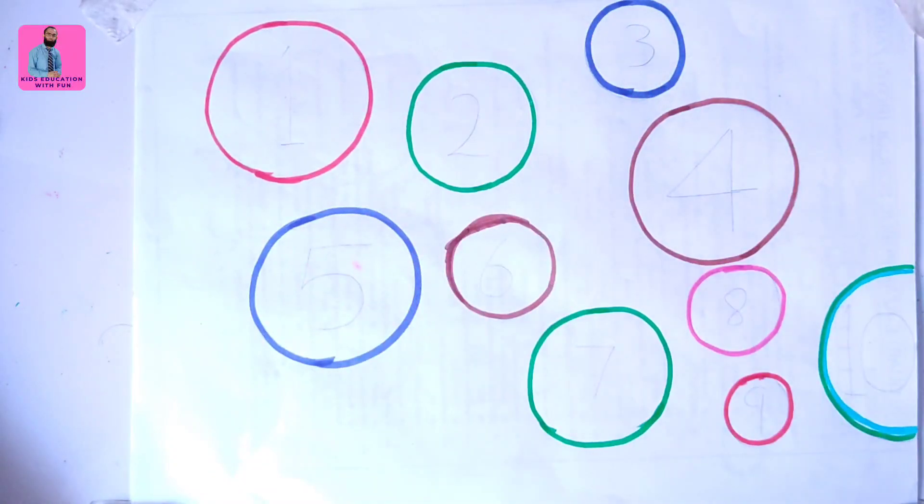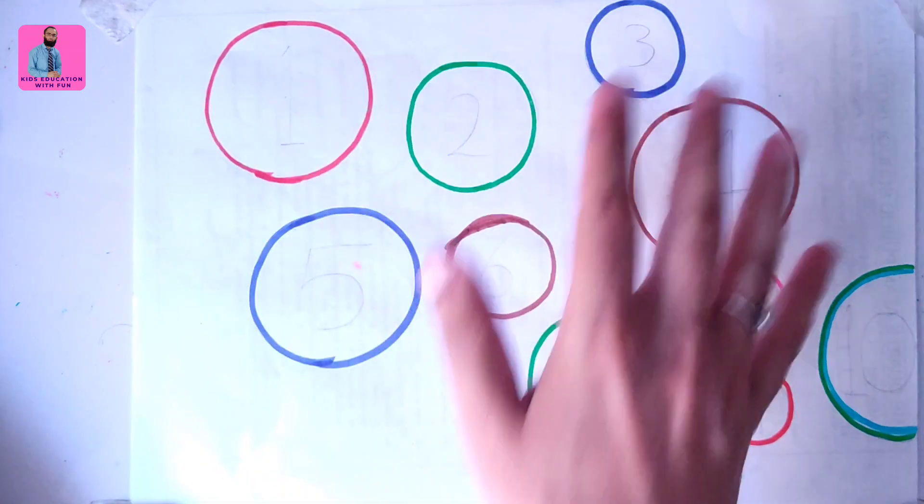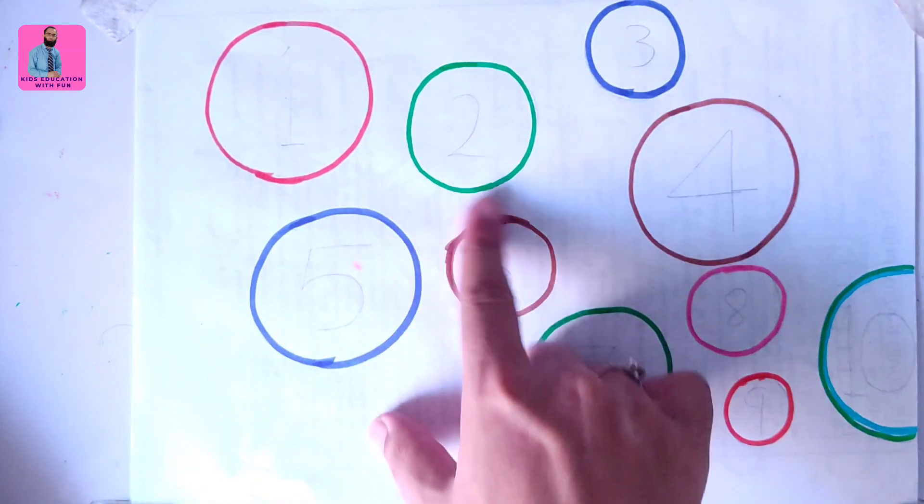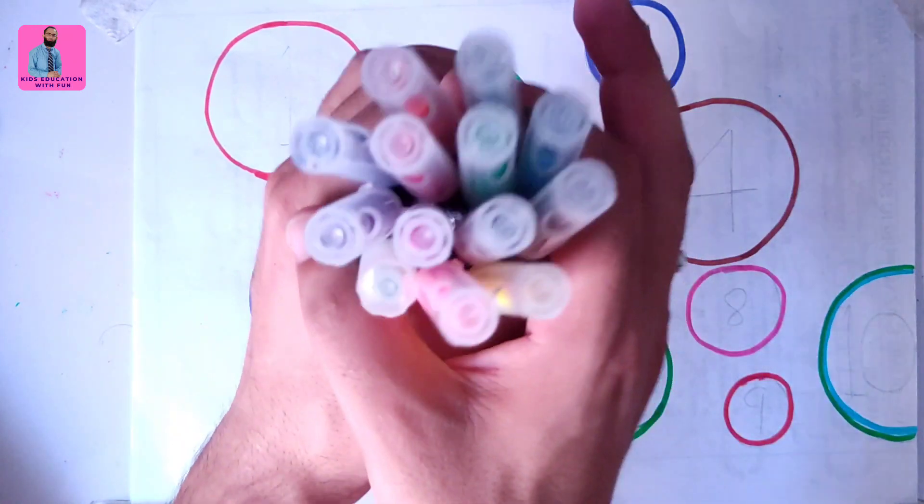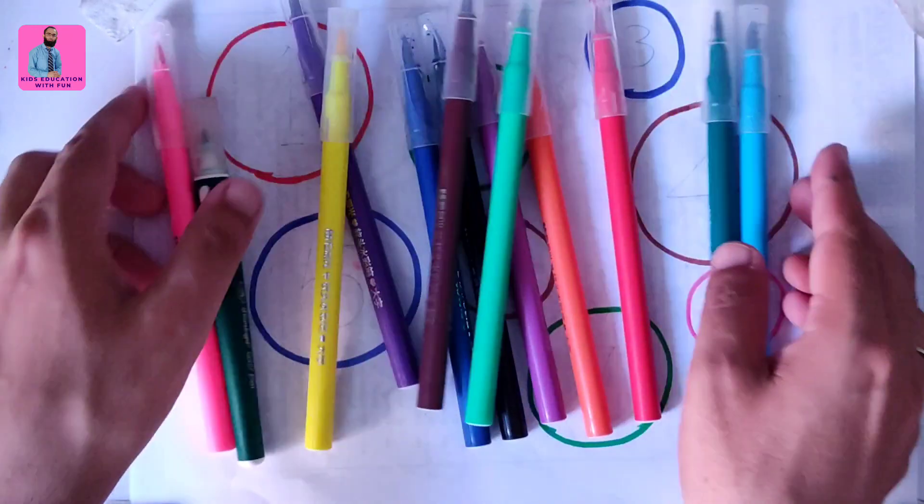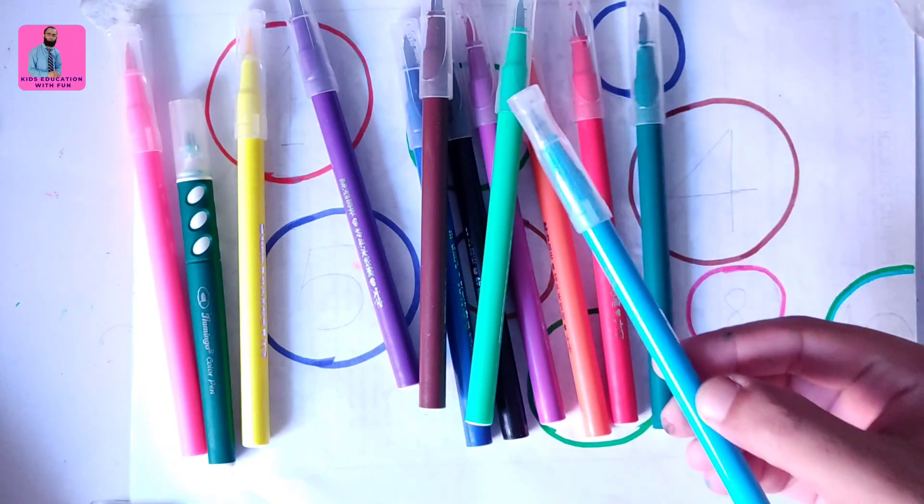Hello kids, welcome to Kids Education with Fun. In this video we are doing a fun activity of counting numbers and writing them and coloring in these bubbles. Before going to that, let's learn some colors. We have sky blue color.